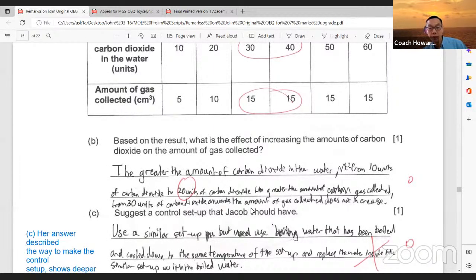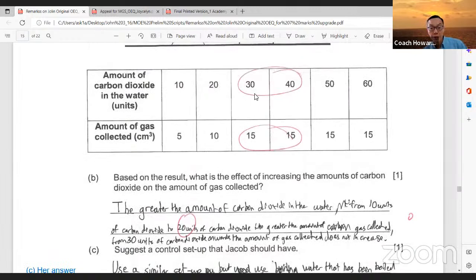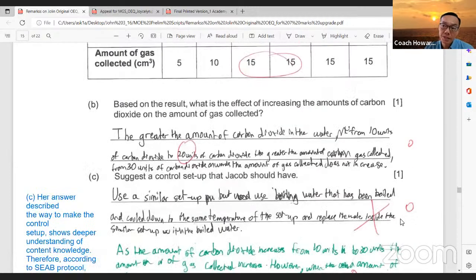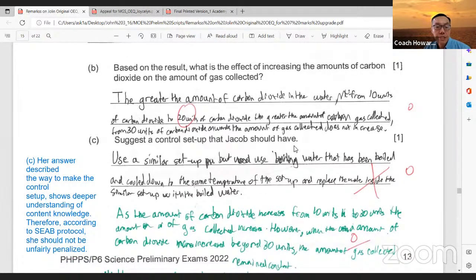For this part B, I recommend that the schools remark her answers. You can see that the greater the amount of carbon dioxide in the water from 10 units to 20 units, the greater amount of gas collected, which is true. From here to here, there's jumped from 5 to 10 centimeter cube. From 30 units of carbon dioxide onwards, the amount of gas collected does not increase.